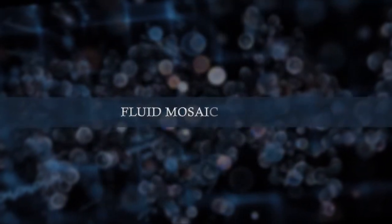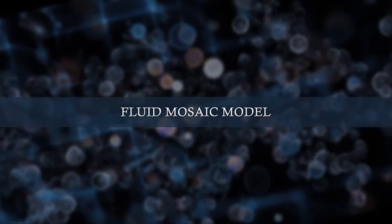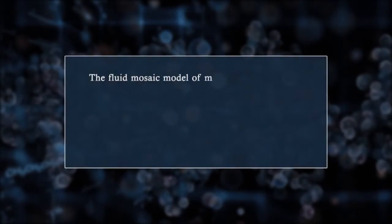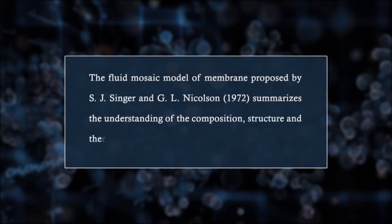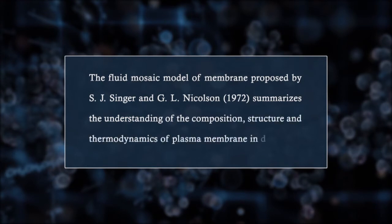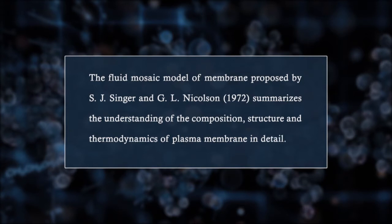Let us now see the fluid mosaic model. The fluid mosaic model of the membrane was proposed by S.J. Singer and G.L. Nicholson in 1972, and it summarizes the understanding of the composition, structure, and thermodynamics of the plasma membrane in detail.